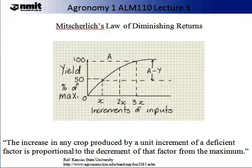In the law of diminishing returns, the increase in any crop produced by a unit increment of a deficient factor is proportional to the decrement of that factor from the maximum. The graph on the slide summarises this relationship. On the left-hand side, you have yield as a percent of maximum; on the x-axis, you have increments of input. At 50% yield you have x increments, and at 100% of maximum yield you have 3 times y increments — the difference between those increments demonstrates the diminishing returns.